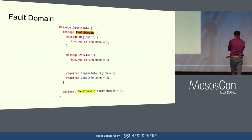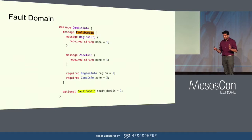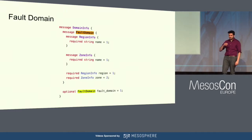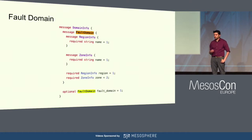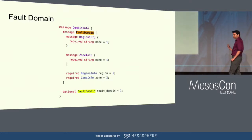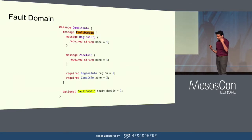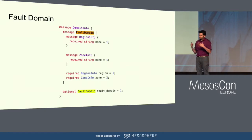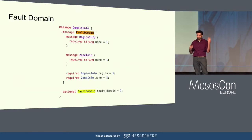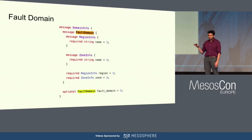Looking at the fault domain protobuf: there's a high-level domain info message — the reason we put it under that instead of just having a top-level fault domain is we thought we'd add more domain types in the future, such as cost domains or latency domains. Right now we're mixing both fault domain and latency domain into one concept because most people don't think about those as different. But you could imagine a fault domain hierarchy being different from a latency or cost domain. For now, as an MVP, we just did fault domains.